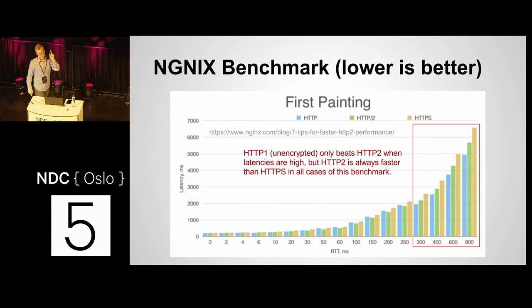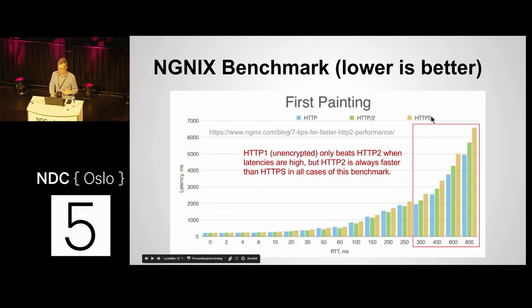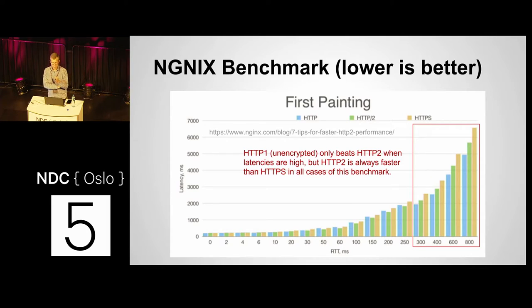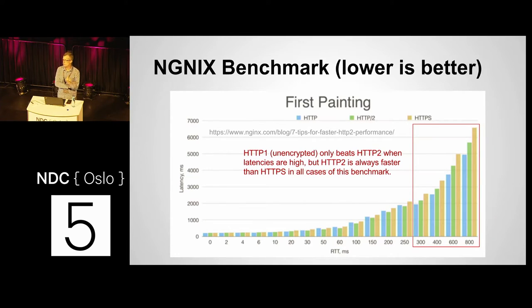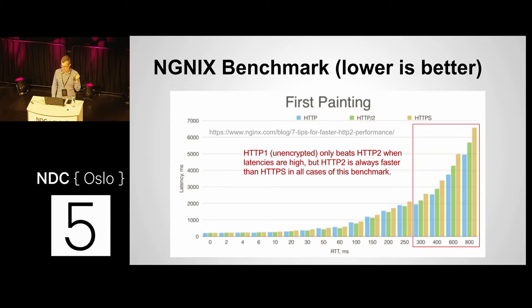Now delivering on benchmarks — this is an interesting benchmark that Nginx ran on their implementation. Blue is HTTP/1, green is HTTP/2, and the brownish color is HTTPS — old H1 over TLS. The only place where unencrypted H1 beats H2 is in the circled red area, but H2 is still faster than encrypted H1. So if you're already running an encrypted site like e-commerce, you'll still get better performance under H2. As long as latencies are less than 300 milliseconds, you're getting double wins — better even than unencrypted H1.